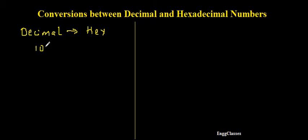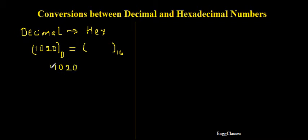I will consider the decimal number 1020 and convert it to its hexadecimal equivalent. To do this I have to divide this number successively by 16. This is very much equivalent to converting a decimal number to binary, where we divided by 2. Here I will divide by 16 because I want a hexadecimal equivalent. I will write the quotient and remainder at each step.